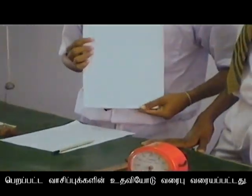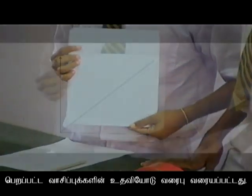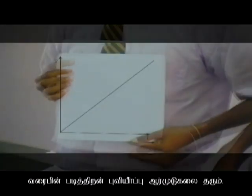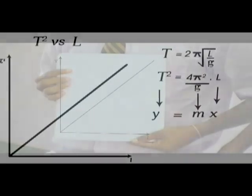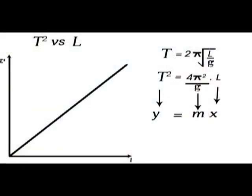Then these readings have to be stated in a diagram and plotted on a graph. The gradient of the graph gives the gravitational acceleration.